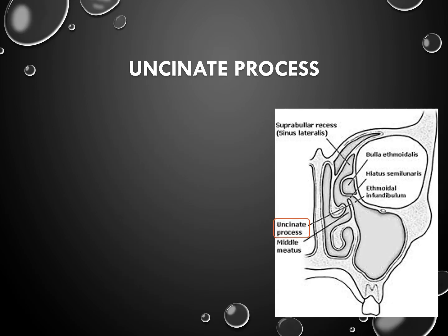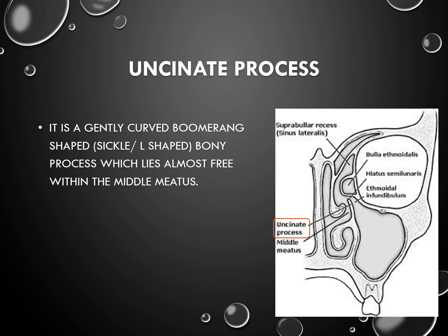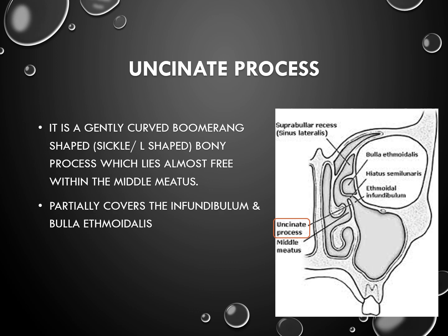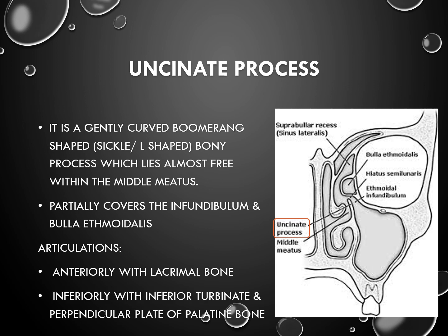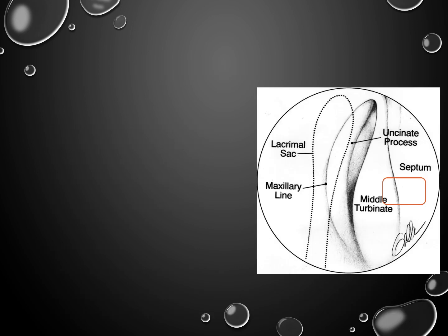Uncinectomy. Before going into uncinectomy in detail, we have to first know what is the uncinate process. It is a part of the ethmoid bone — a gently curved, boomerang-shaped bony process which lies almost free within the middle meatus. It partially covers the infundibulum and bulla ethmoidalis, and articulates anteriorly with the lacrimal bone, inferiorly with the inferior turbinate and perpendicular plate of the palatine.